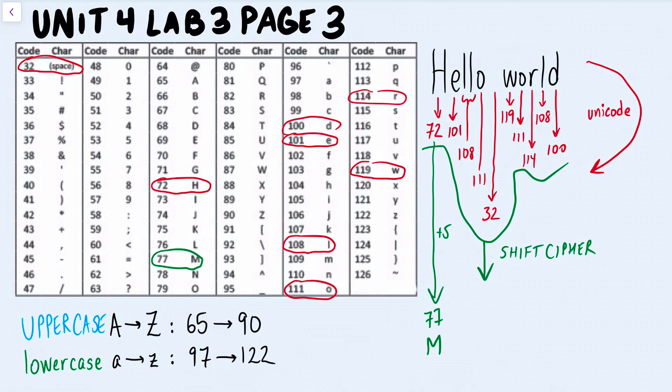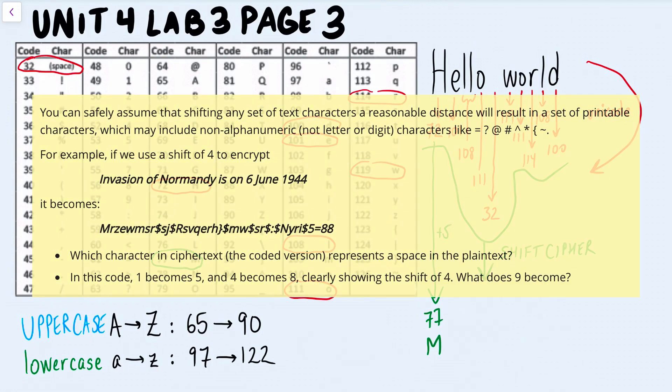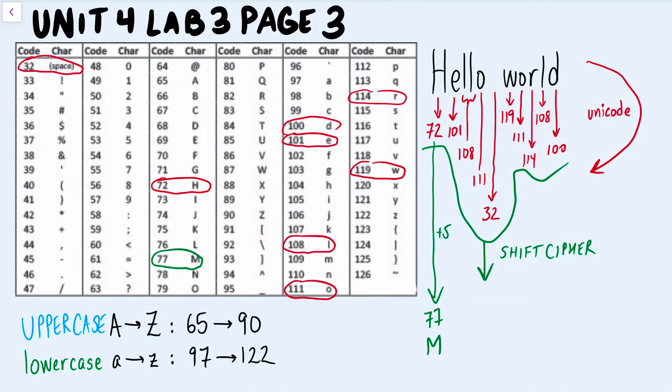In the lab, I think they gave you the invasion of Normandy is on June 6, 1944, and then it shows you what it looks like in Unicode. But you'll notice that it does not have all letters. It has other characters like dollar signs, it has the curly braces, it has an equals, it has a colon, so it doesn't come out to just letters if you use Unicode.